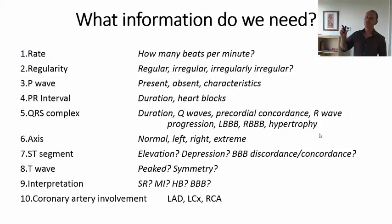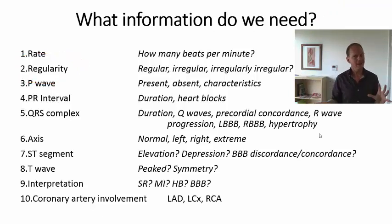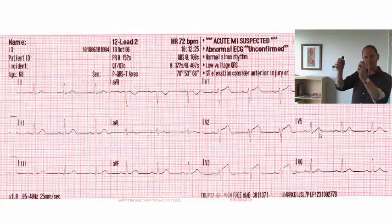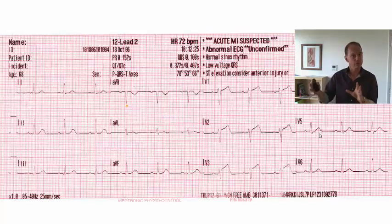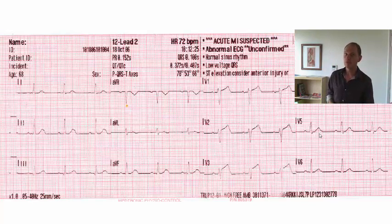The next thing I look at is the regularity. Is it regular? Is it irregular? Is it irregularly irregular, as in the case of atrial fibrillation? If we look at this rhythm it's nice and regular — a really good way to work this out is simply to fold the ECG over on itself, hold it up to the light, and see if the QRS complexes line up nicely. Also consider that a young teenager, for example, is particularly susceptible to sinus arrhythmias relating to inspiration and expiration. That is a normal change, but still a sinus arrhythmia — see these things in the context of the patient you're assessing to determine if this is normal for them.